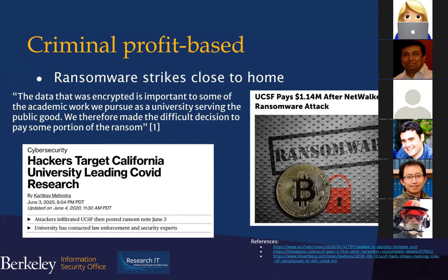What really struck me about UCSF — and very similar events have happened at other institutions all over the country — is just how impactful that is for researchers who depend on this data, who wake up one day and are told: we don't have your data and we don't know if we can get it back. I invite you to think about the research data you're working with: what would happen if you tried to open a file and instead there was a note saying go to this bitcoin address? Have you thought about your backups? Have you tested them? How confident would you feel that you can get your data back?